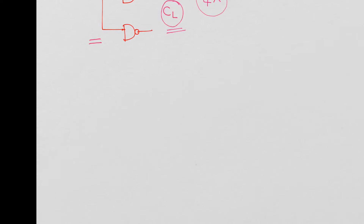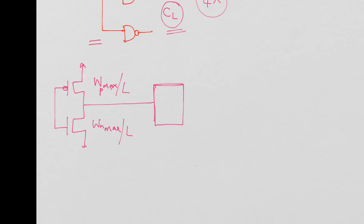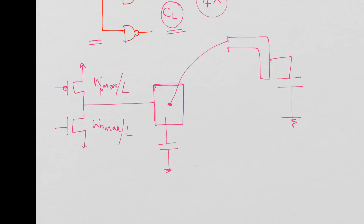Now let's look at output buffers. An output buffer is something that drives a pad. An output buffer is nothing but a huge inverter — W is maximum, so W_P_max and W_N_max over L. It's a huge device because it's supposed to drive your output pad. The output pad is bonded to the pin on the IC, which is then connected externally where there is a huge capacitance. So the output buffer has to drive large capacitances. That is what the output buffer is supposed to do — but how do we design it?